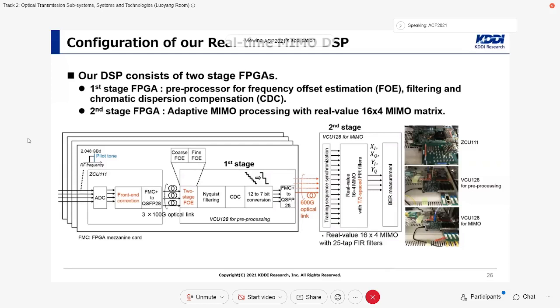In the second stage FPGA, adaptive MIMO processing with real-value 16x4 MIMO matrix and half-symbol spaced 25 FIR taps were performed. After the MIMO, bit error rates of equalized mode were counted. All signal processing, including BER counts, were performed in real-time.